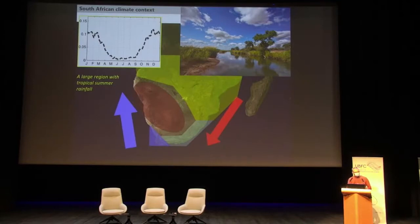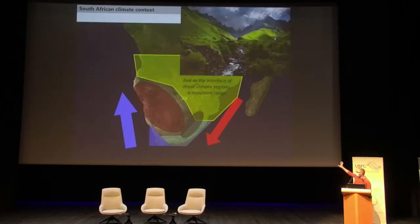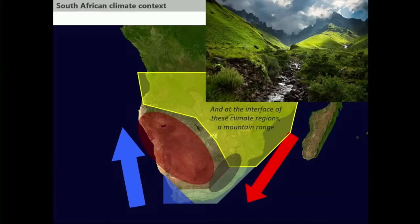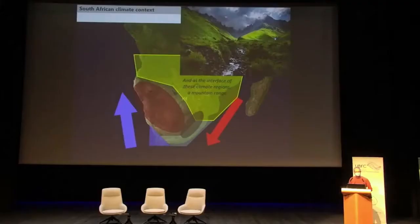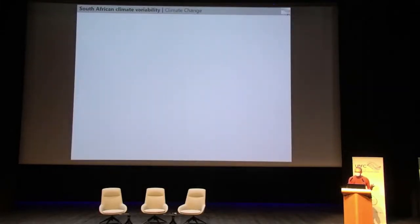To complexify the problem a little further, just in the middle of all these climate zones, we have a high mountain massif called the Drakensberg, more than 3,000 meters above sea level, which has a strong influence on atmospheric circulation, moisture fluxes, and the regional climate. This is just to say that even the mean climate context of South Africa is not an easy one. Of course, that climate varies in time, and I'm going to present some of the variations that we can record in the climate of South Africa.